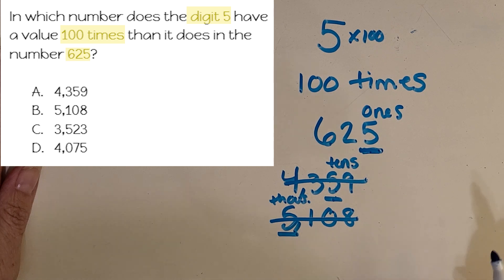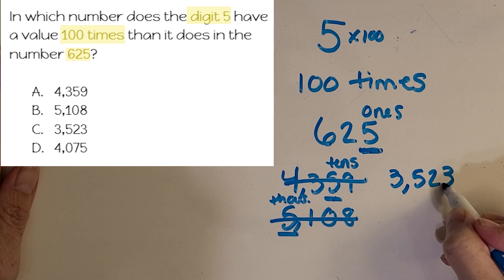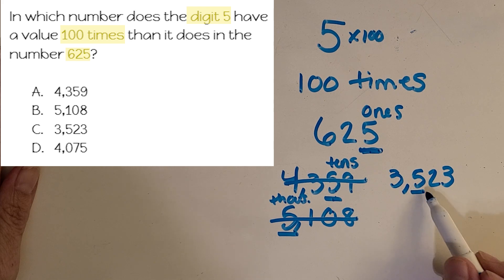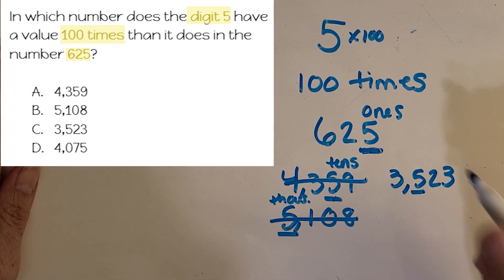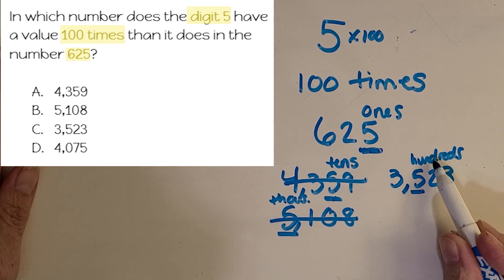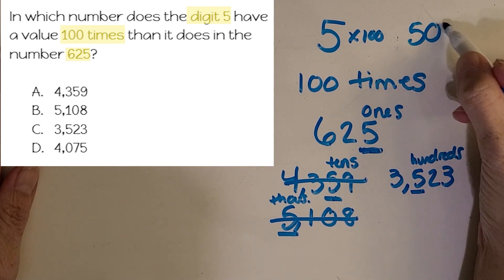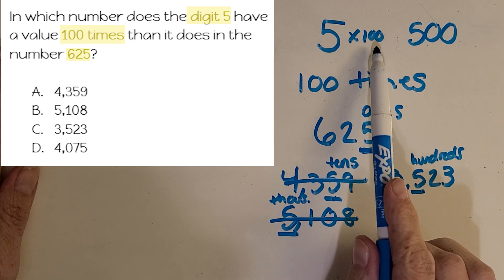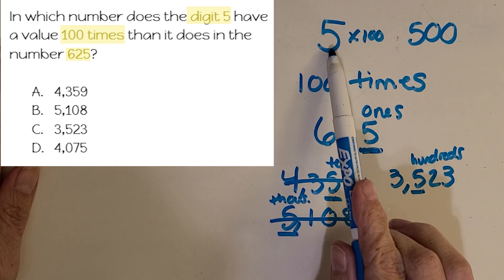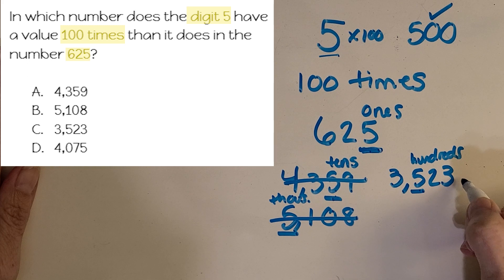Let's look at C now — 3,523. Again, we're going to underline that 5 and study it. What place is the 5 in? You got it — it's in the hundreds. And how much is a 5 in the hundreds worth? 500. So what do you think — is that 100 times just 5? Yes it is. So I think we're probably going to go with C.